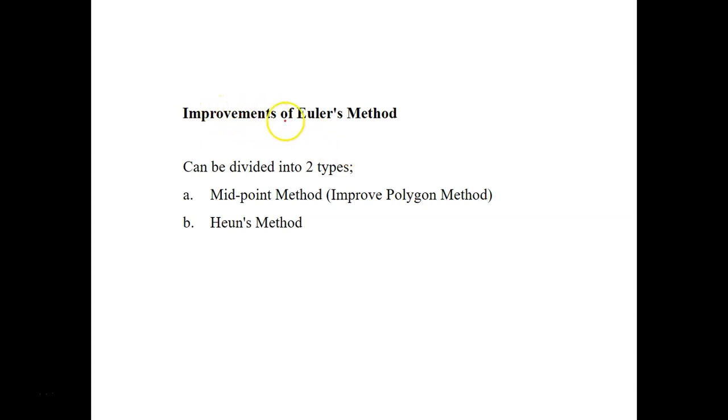Okay, next up is improvements of Euler's method. So for this we're going to learn two new methods: the midpoint method, also known as the improved polygon method, and the other one is Heun's method.